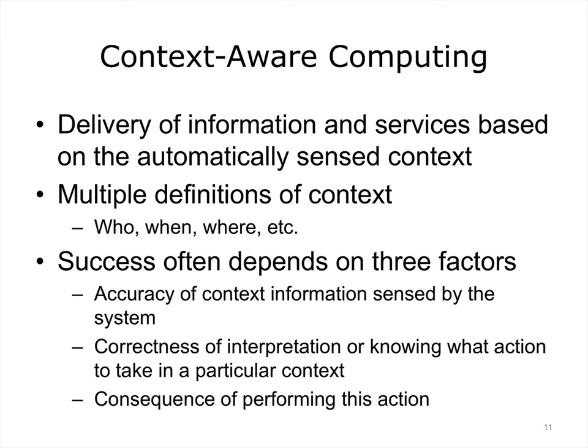The success of context-aware computing often depends on three factors: the accuracy of context information sensed by the system, the correctness of interpretation — or knowing what action to take in that particular context — and the consequence of performing the action.